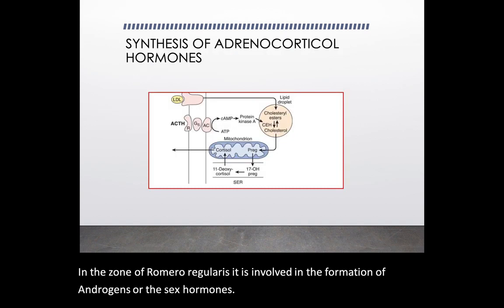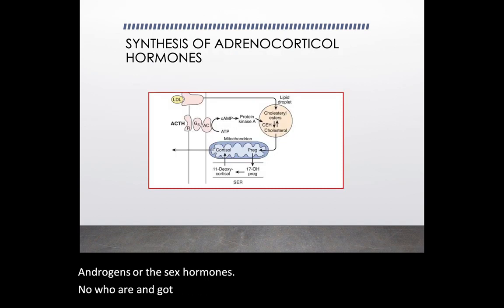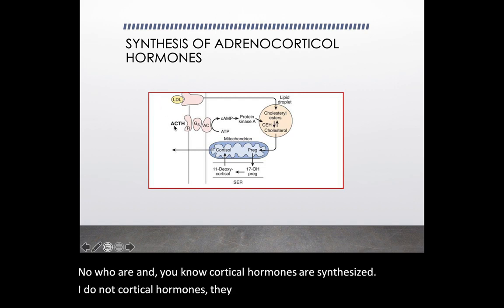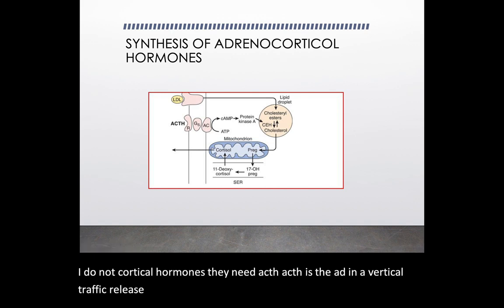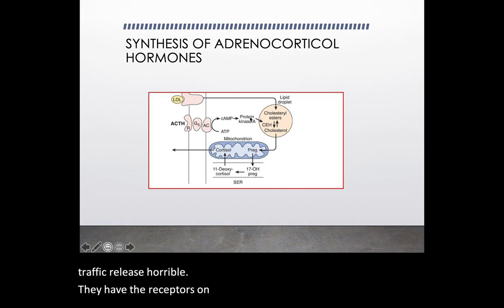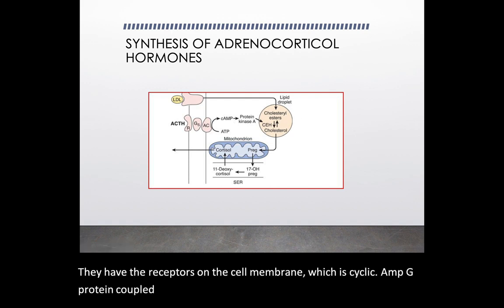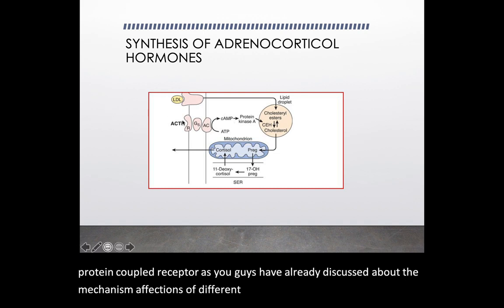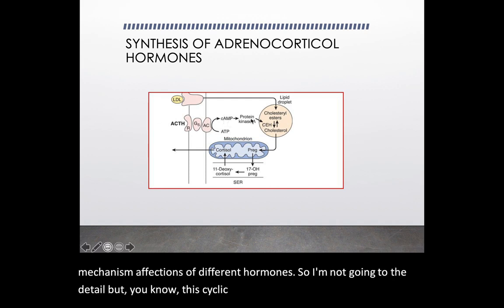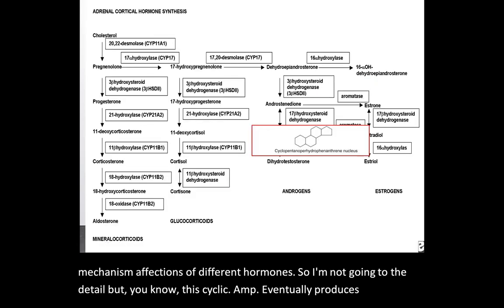Now, how are adrenocortical hormones synthesized? They require ACTH — adrenocorticotropic hormone. ACTH has receptors on the cell membrane, which is a cyclic AMP G-protein coupled receptor. Through this mechanism, cyclic AMP eventually produces protein kinase A.